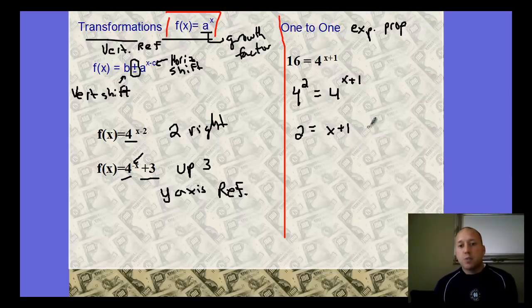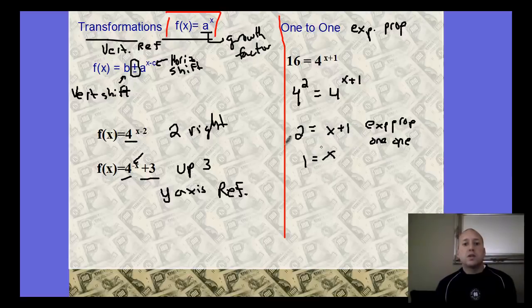That's called the exponent property of one-to-one. The only way that these two things are going to be equivalent is if their powers are equivalent. If you're looking at your proofs from geometry, kind of explaining how you're getting that, that's what you could put. Then we can just solve that. So that x would equal 1, subtract 1 from both sides. That helps us solve our functions.